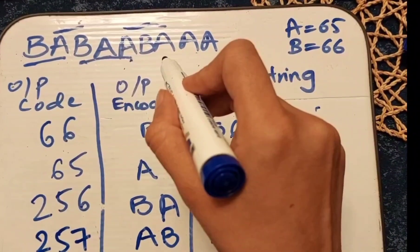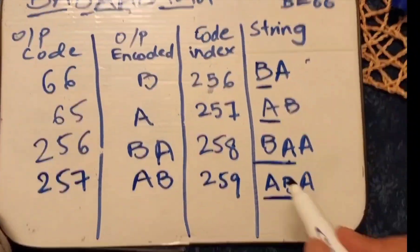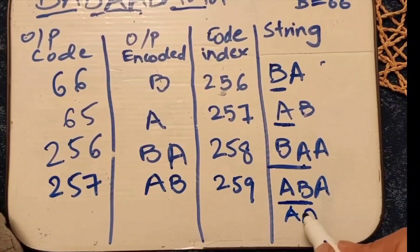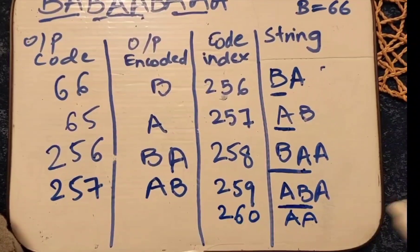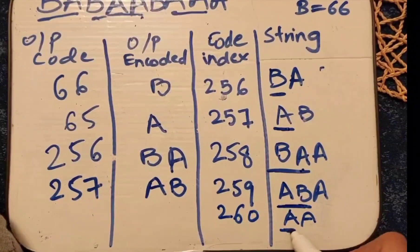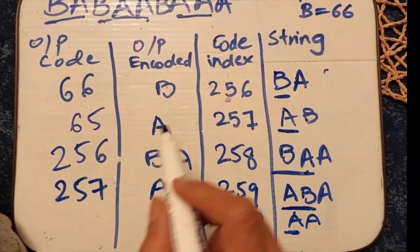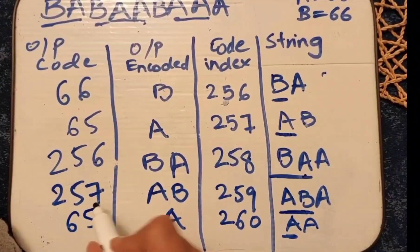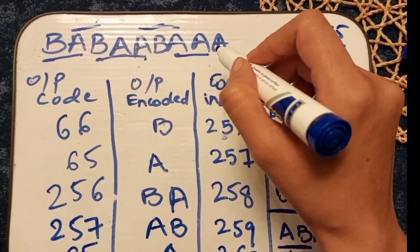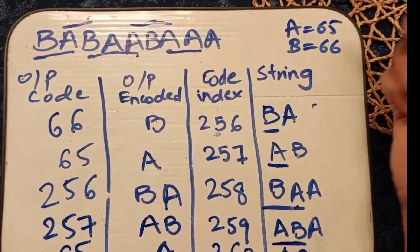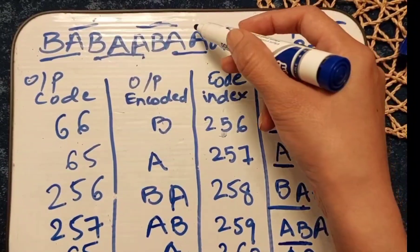The next substring starts from 'a' and we take 'aa'. The index increments to 260. The first element is 'a', so the encoded output is 'a' and the code for 'a' is 65. We can see that we are now only left with one element 'a' in the string.